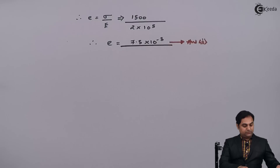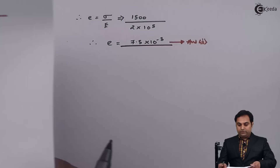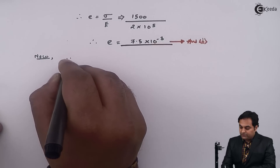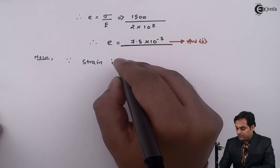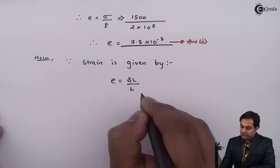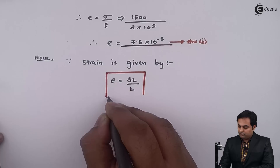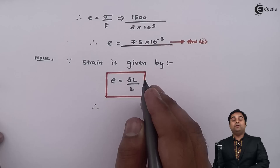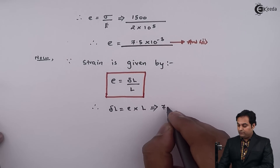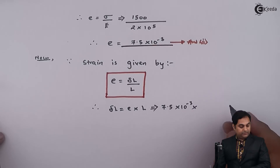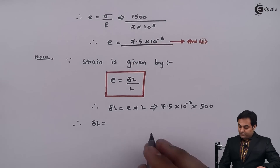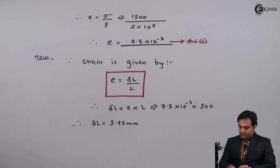Now after getting strain, the last part is to calculate the elongation of the rod. Since strain is also defined as change in length divided by original length, the elongation Delta L equals strain multiplied by L. Strain is 7.5×10⁻³ and the length of the rod is 500 mm. So the elongation comes out to be 3.75 mm.